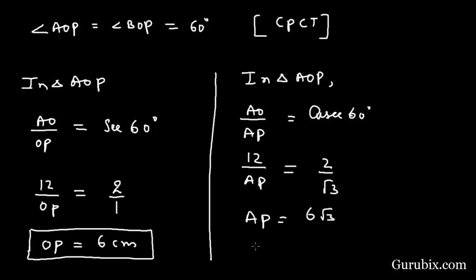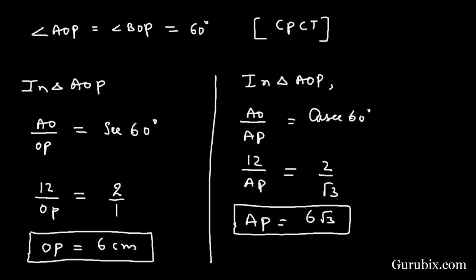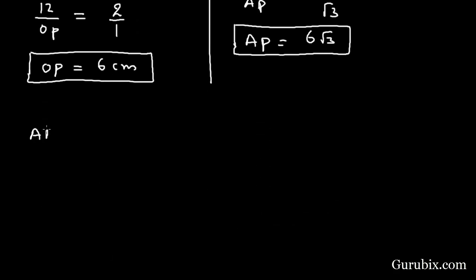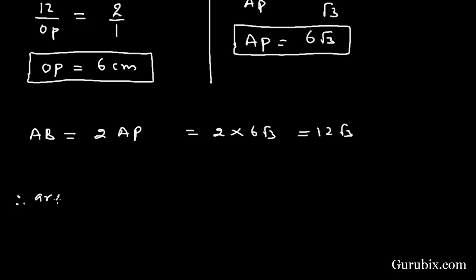Since OP bisects chord AB, the length of chord AB equals 2 × AP = 2 × 6√3 = 12√3 cm. Now we can find the area of triangle AOB using the formula: half × base × height, where base AB is 12√3 and the perpendicular height OP is 6 cm.